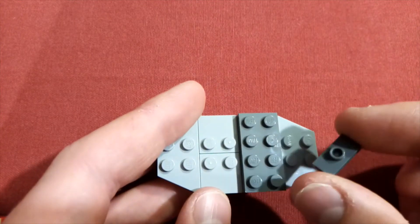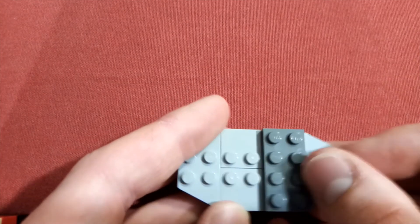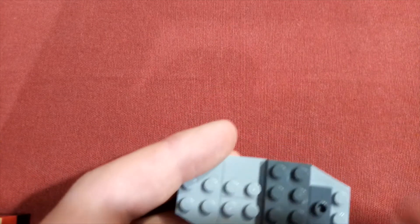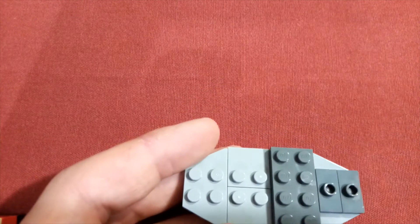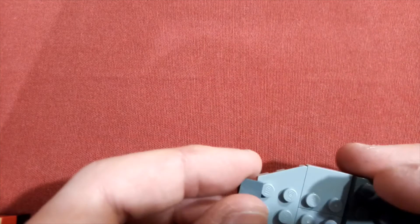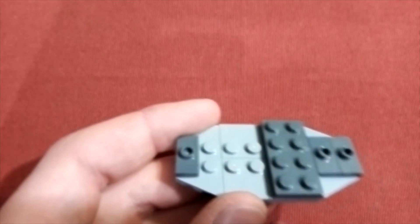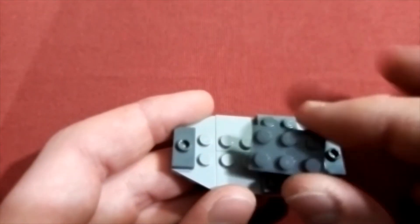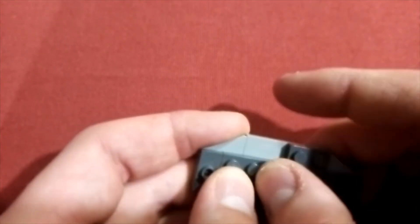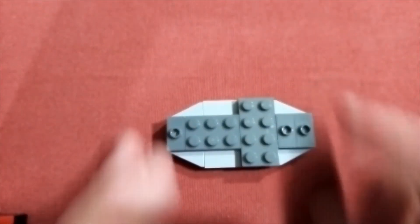Now take three 1x2 jumper plates and put them next to the 2x4, next to the other one, and then at the opposite end. Just there, and finally a 2x3 in dark bluish grey. That's the bottom done.